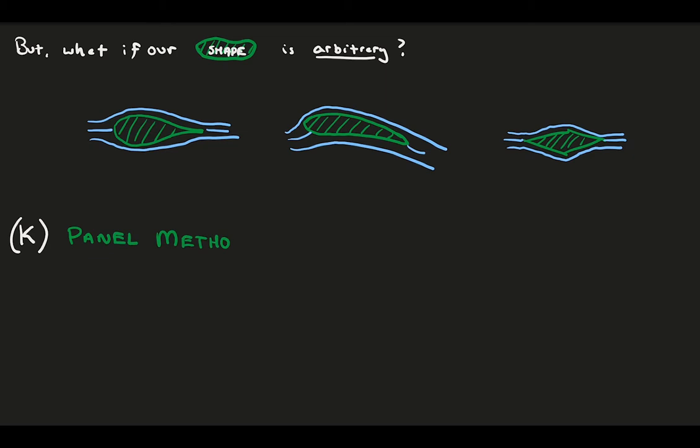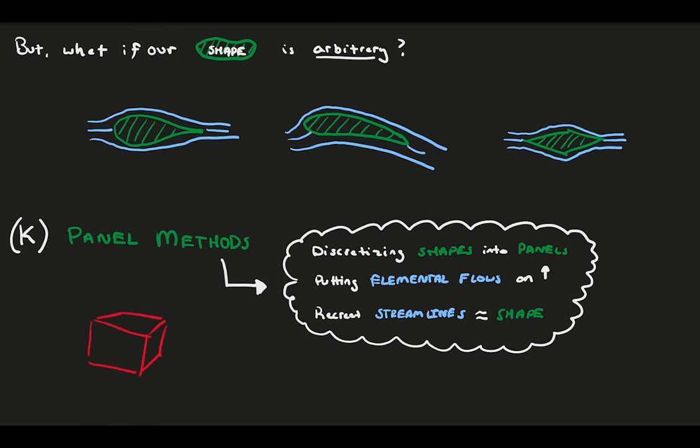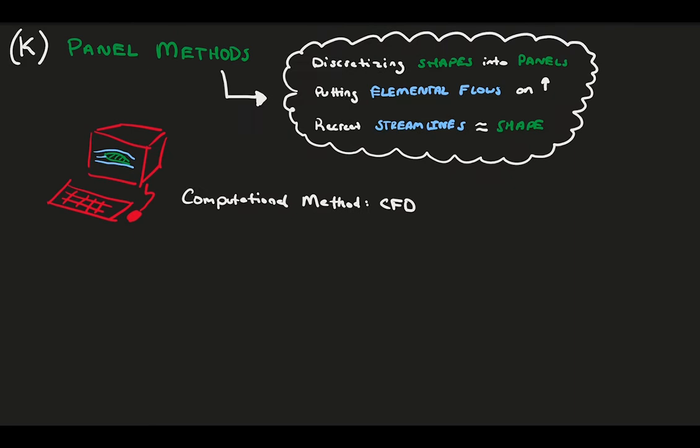With the panel method, we discretize complex aerodynamic shapes into panels. On each panel, we place a mini-elemental flow. By tuning the strength of each mini-flow element, we can recreate the streamlines that represent the original aerodynamic shape, thus recreating the flow. Because of this discretization, this technique is primarily computational, though it was developed back in the days of Prandtl. It didn't take off until computing power started to catch up to our analysis techniques.